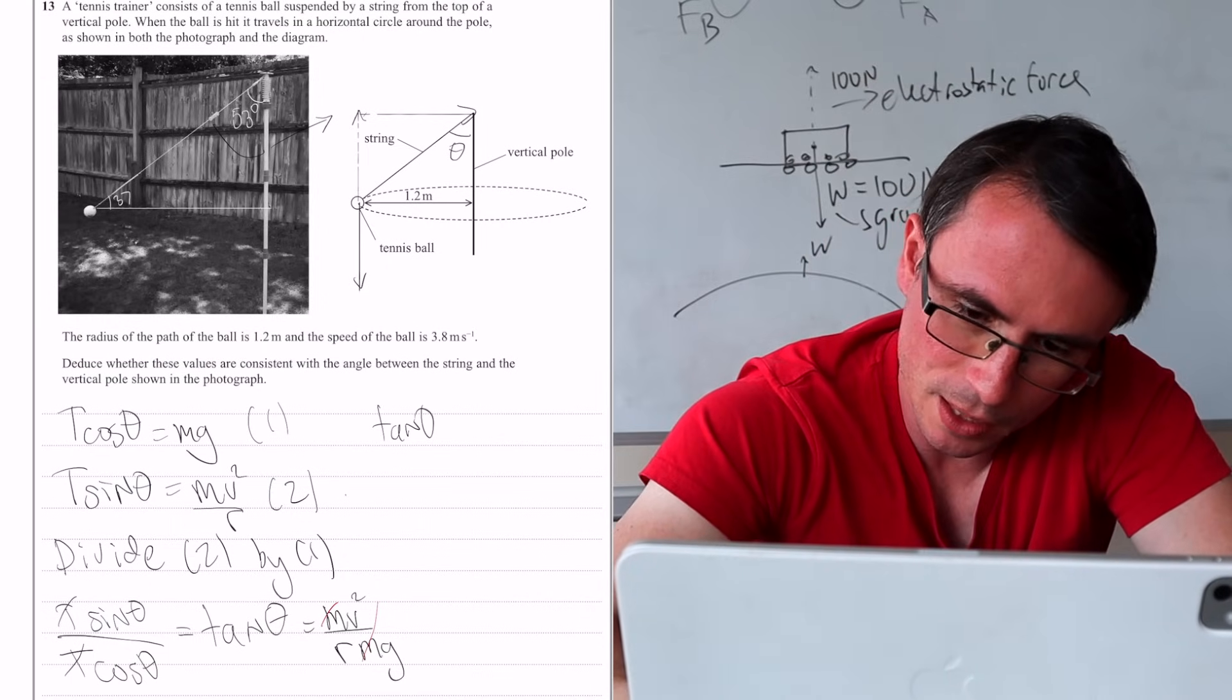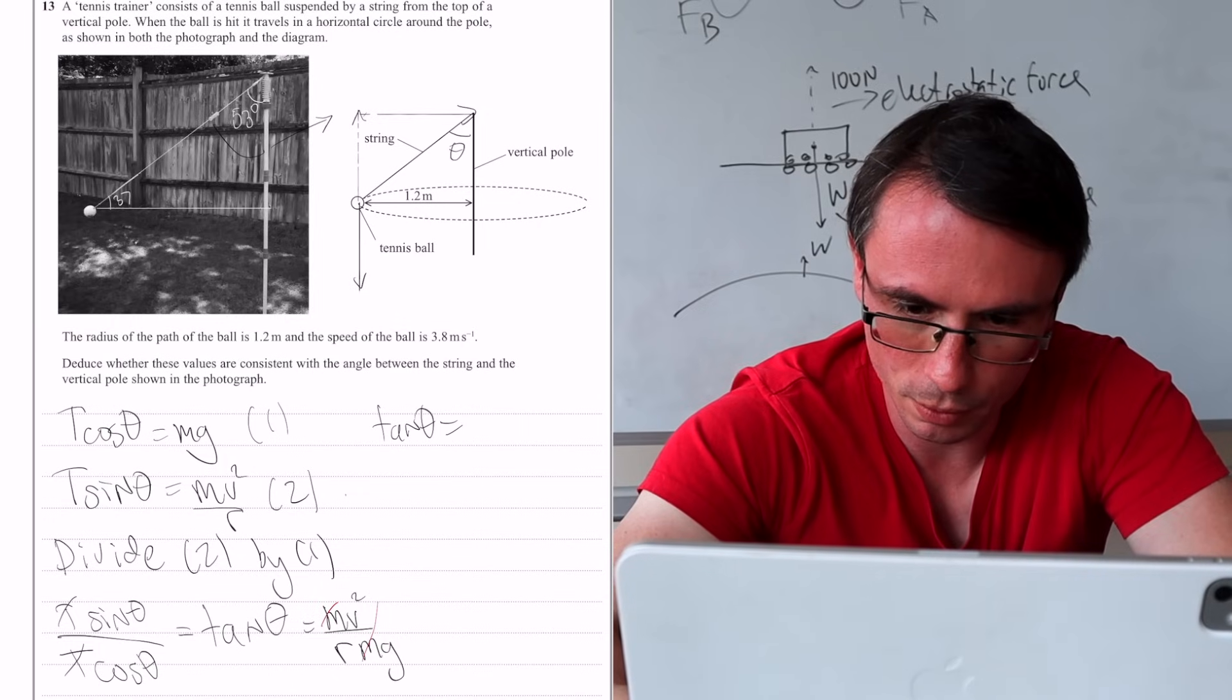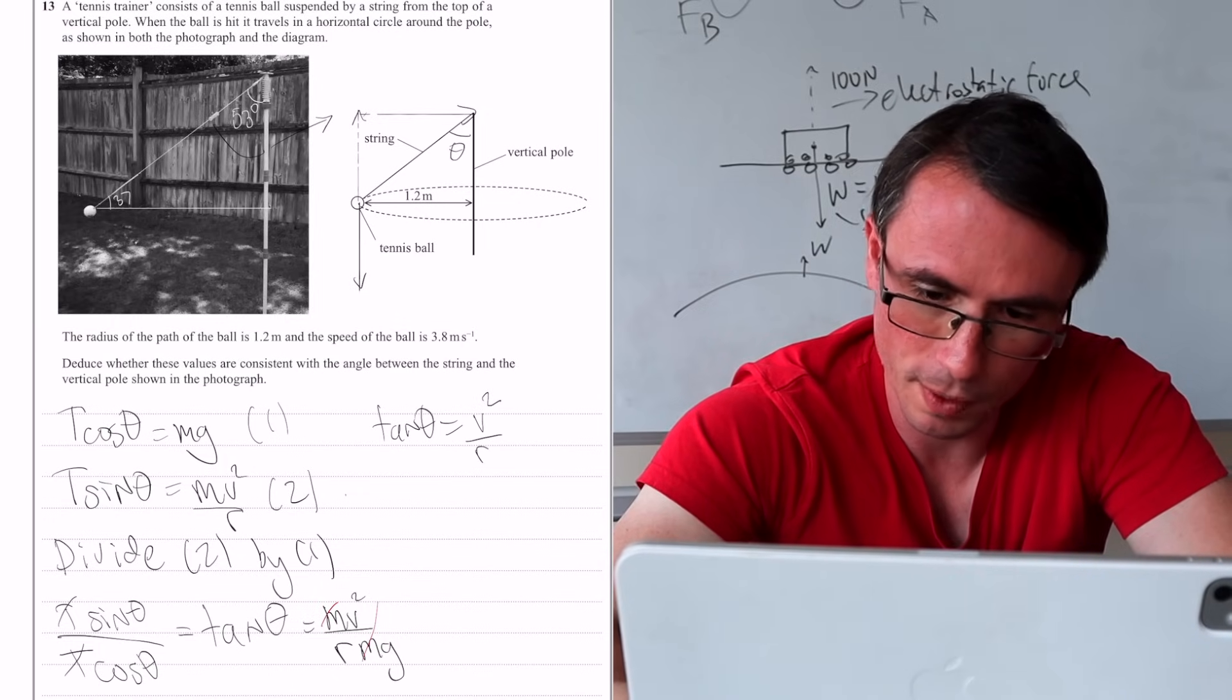So let's cancel out the m's and we've got an expression for tan of theta. Tan of theta will simply be equal to v squared over rg.